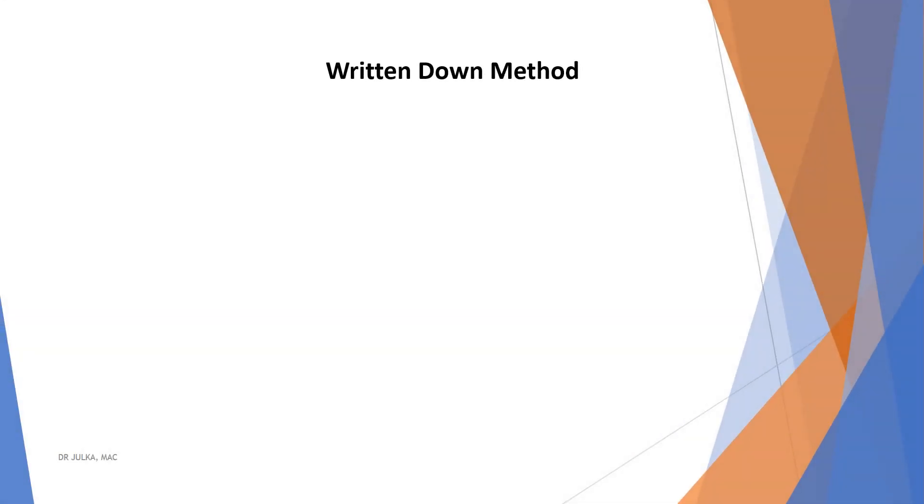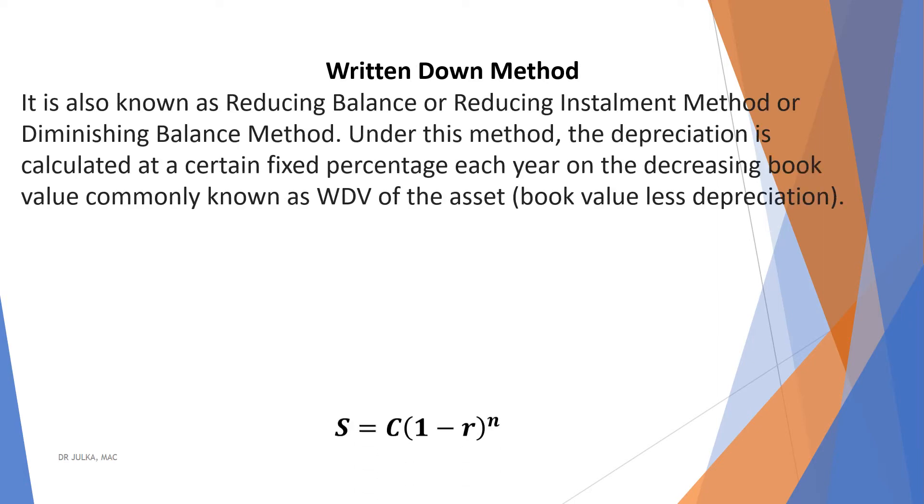Next method for depreciation, written down method. It is also known as reducing balance method or reducing installment method, where S equals C multiplied by 1 minus R whole raised to the power N. Where C stands for original cost of asset, S stands for estimated scrap value, R stands for rate of depreciation and N denotes number of years.